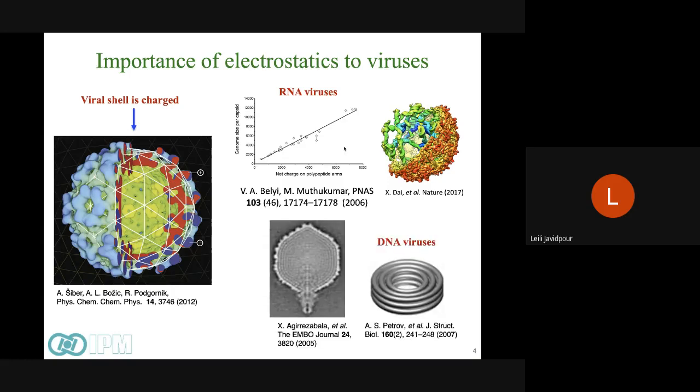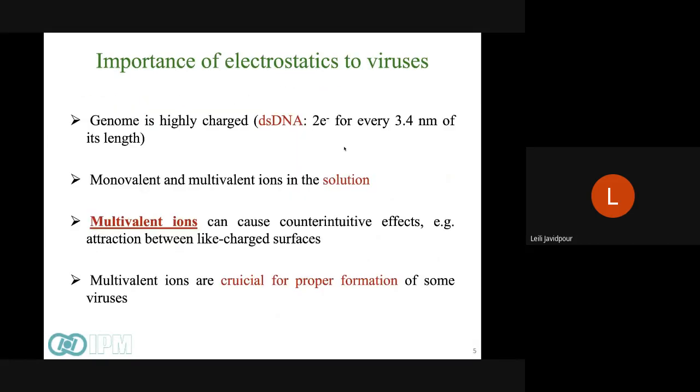But for DNA viruses, for example some bacteriophages, the strategy is different, and we have toroid-like shapes made from DNA strands, which is the code needed for virus to replicate. For this part, you can also remember DNA condensates that Ali talked about yesterday. And for such structures, multivalent ions are crucial, which we also want to focus on in this talk.